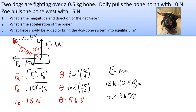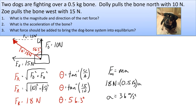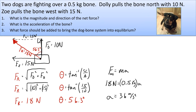That's a big acceleration — these dogs are going crazy. Somebody needs to slow them down. For part three: what force should be added to bring the dog-bone system into equilibrium? We want the net force to become zero. We have the resultant force of those two combined — what if we added a force completely opposite to that? This is our third force, F3.